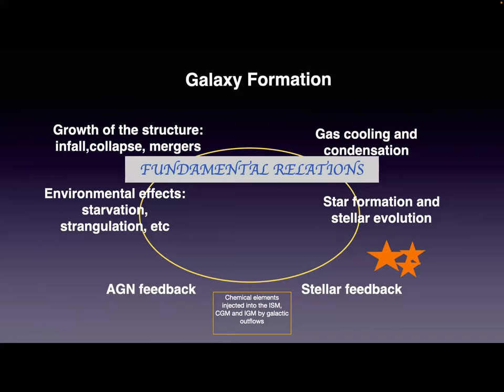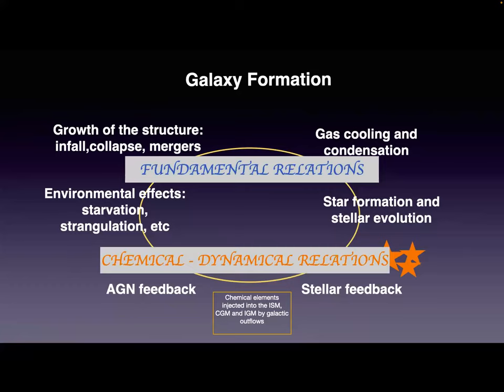As galaxies form and evolve, they determine fundamental relations between the stellar mass, the circular velocity, and the size. There are also relations between the chemical abundances of the stellar population and their dynamics or kinematics. We know, for example, that the bulge in the Milky Way has a stellar population with a certain kinematics and dynamics, but also very particular chemical abundances that are different from the stars of the stellar population on the disk of the Milky Way. Having this information consistently within the galaxy formation model is a very powerful tool to compare with observations.